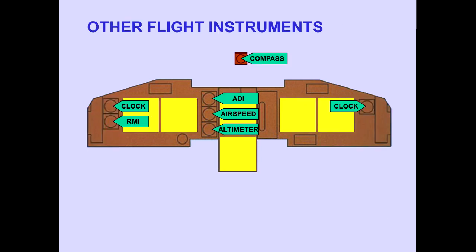Other flight instruments are the standby compass, standby attitude deviation indicator, airspeed indicator, and altimeter. Two clocks and a radio-magnetic indicator are also provided.